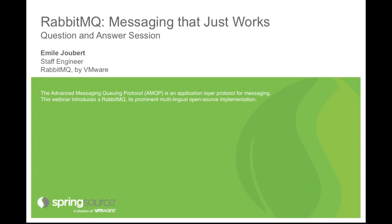Is RabbitMQ fully open-sourced? Yes, it's fully open-sourced. All of the source code and all of the officially supported clients are released under the Mozilla Public License. It's possible for anybody to look at the source code and even make contributions. The AMQP specification itself is open as well, so there are no legal fees and no legal encumbrances to doing your own implementation and interoperating with other implementations.